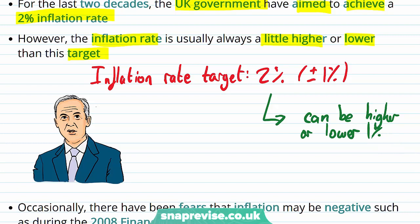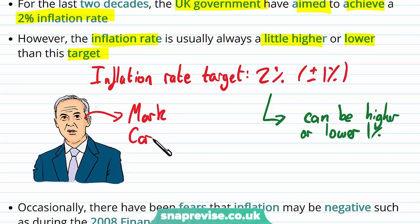Who is responsible for meeting the two percent inflation rate target? It's the Bank of England, and specifically the Monetary Policy Committee — the MPC — headed by Mark Carney, who is also the Governor of the Bank of England. The nine members of the MPC meet once a month and vote on whether to change the interest rate, which the Bank of England uses to control inflation.